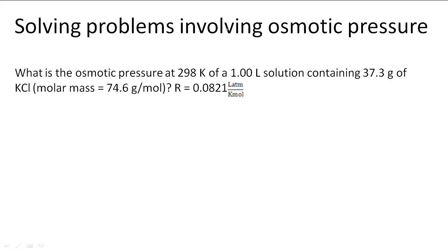Solving problems involving osmotic pressure. In this problem, what is the osmotic pressure at 298 Kelvin of a 1.00 liter solution containing 37.3 grams of potassium chloride?